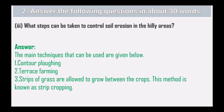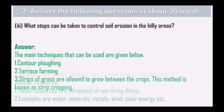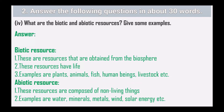What steps can be taken to control soil erosion in hilly areas? Main techniques include contour plowing, terrace farming, and strip cropping, where strips of grass are allowed to grow between the crops. Next question: what are biotic and abiotic resources? Give some examples.